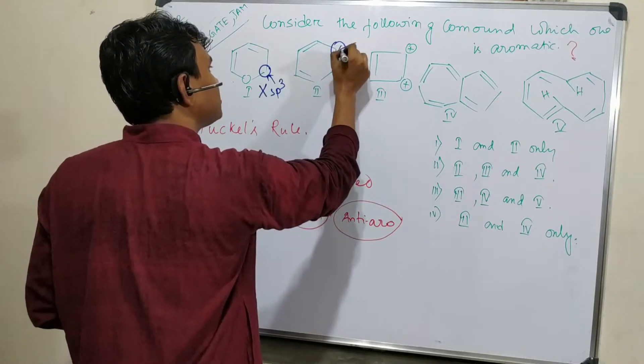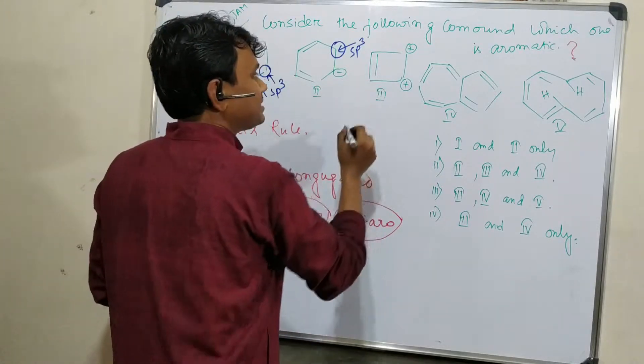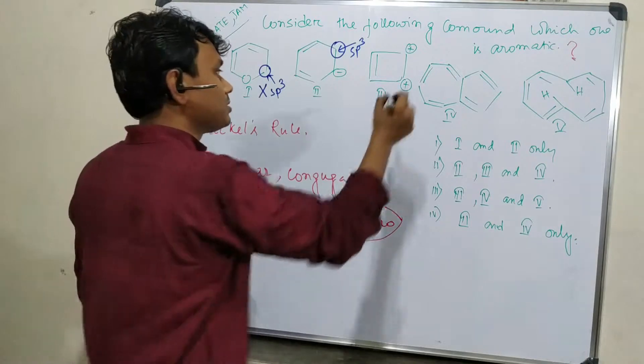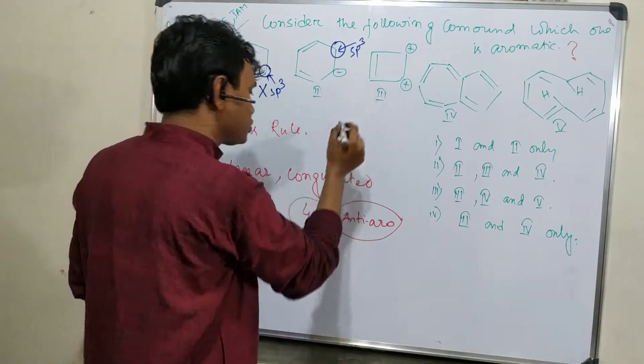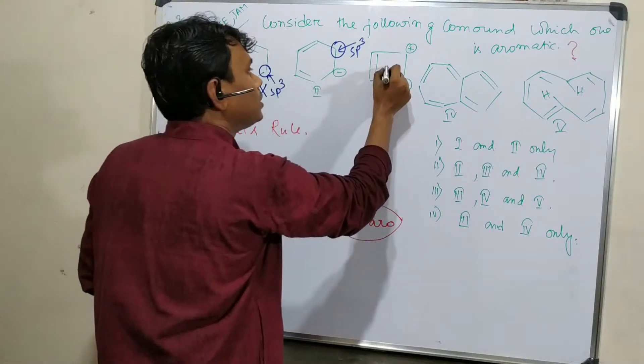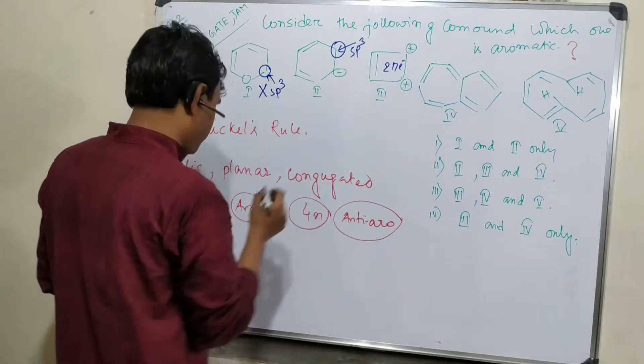This is cyclic, planar, conjugated because these are plus charge means p orbital conjugated and contains 2 pi electrons. From that point, if n equals 0, then total number is 2, so this is aromatic.